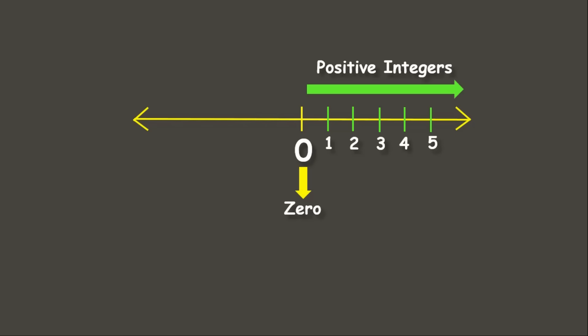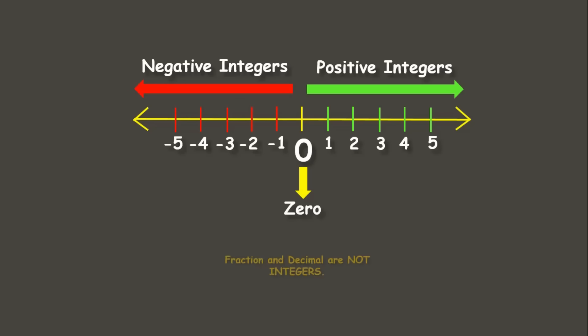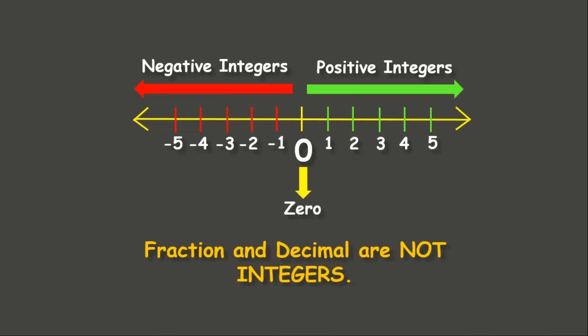The numbers to the left of 0 are the negative integers, which must be written with the negative sign. Remember that integers are whole numbers. Fractions and decimals are not considered as integers.